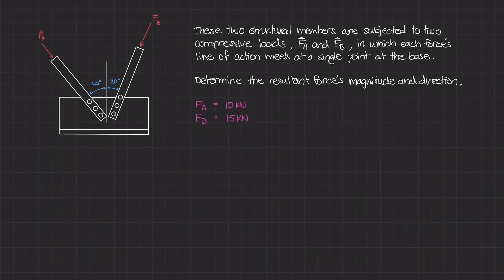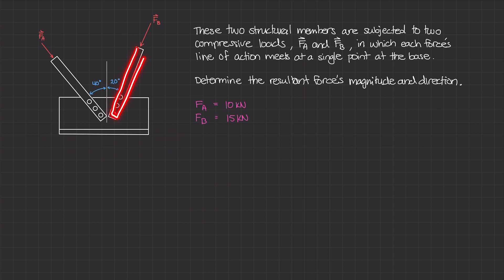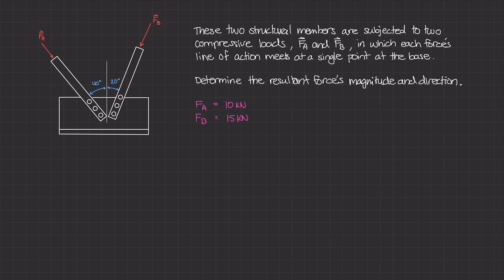Welcome back. In this example, we are going to find the resultant of two forces, F-A and F-B. We have a cutout of a structural system with structural elements bolted or welded onto a horizontal plate. These two structural members are subject to compressive forces F-A and F-B, with magnitudes of 10 kilonewtons and 15 kilonewtons respectively.